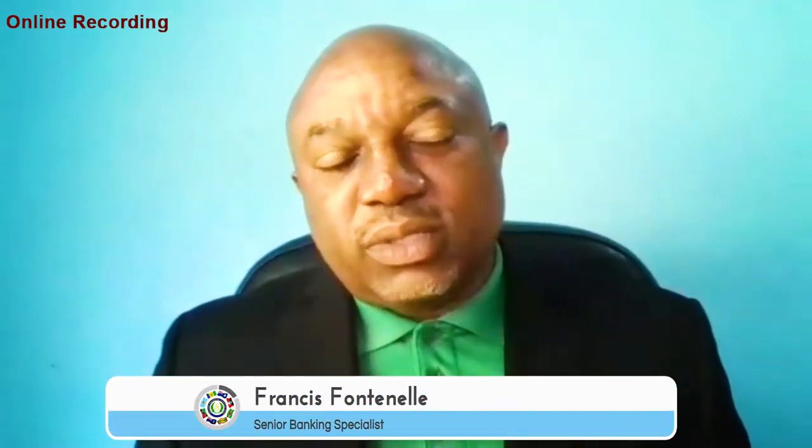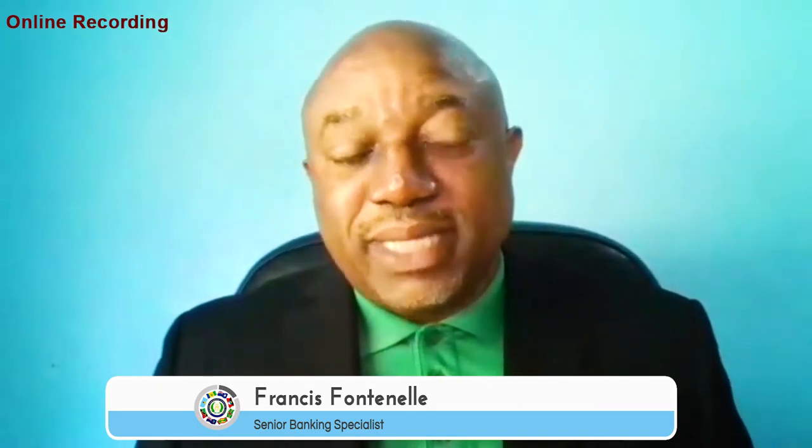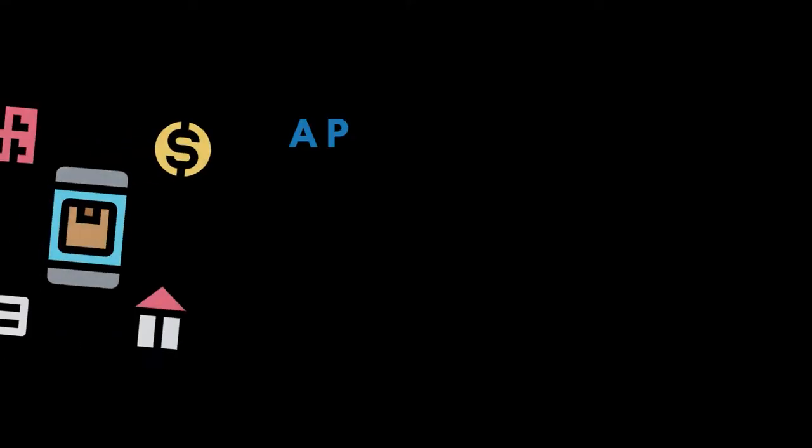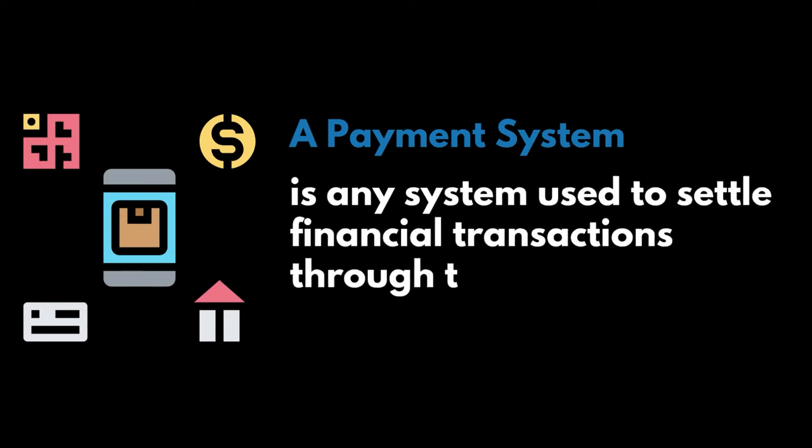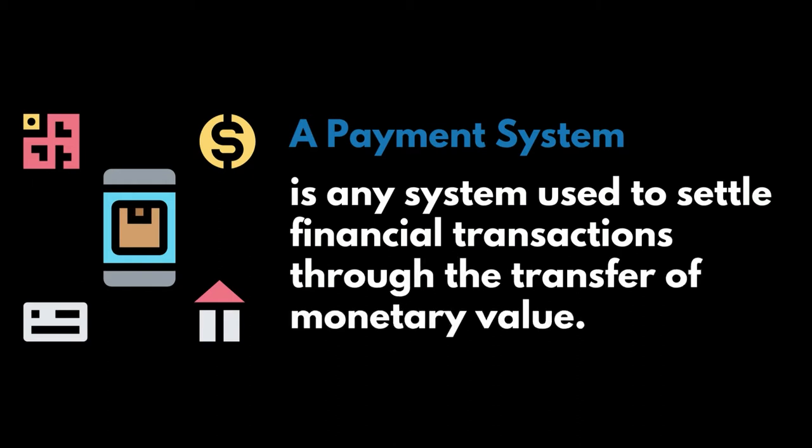The mechanism through which funds are transferred between individuals, between businesses, governments — or we call them economic agents in economic terms — is referred to as the payment system. This is a mechanism; we can also describe it as any system used to settle financial transactions for the transfer of monetary value. Essentially, the payment system of a country allows funds to be transferred between individuals seamlessly. Behind the scenes, when somebody goes to a counter and uses their credit card, check, or cash, there's a whole system in place that allows this movement of funds to happen, and it happens almost instantly.